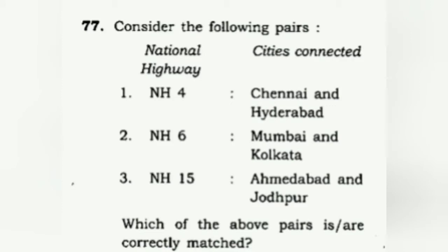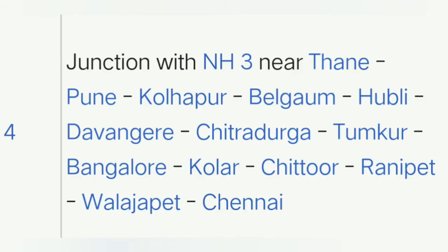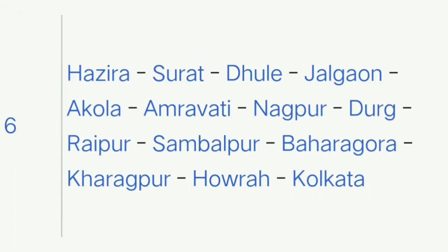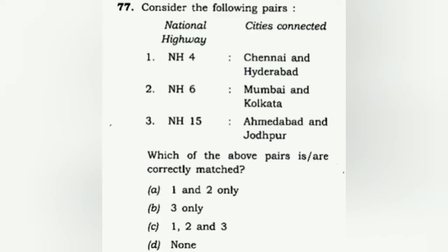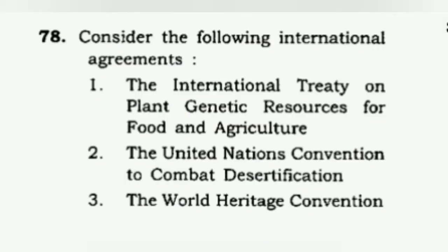Consider the following pairs of national highways. In geography, make sure you know the infrastructure details. We have National Highway 4, 6, and 15 and need to verify their routes. NH4 is wrong because Chennai is listed but Hyderabad is not. NH6 is wrong because Kolkata is listed but Mumbai is not. NH15 is wrong because neither endpoint listed is correct. The correct answer is D: none of them.